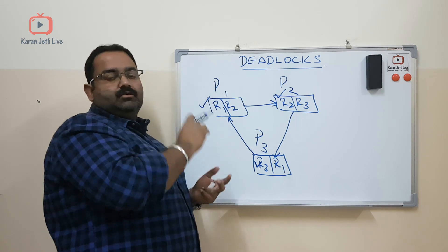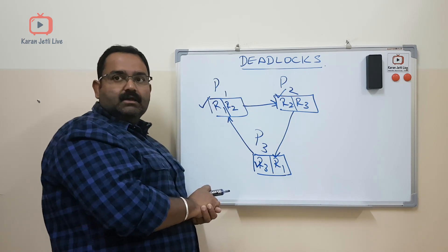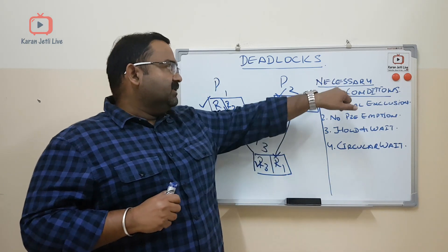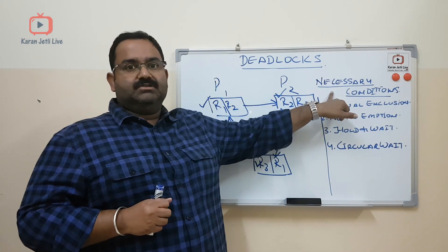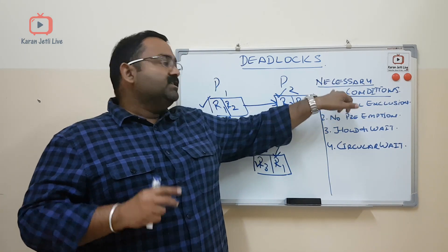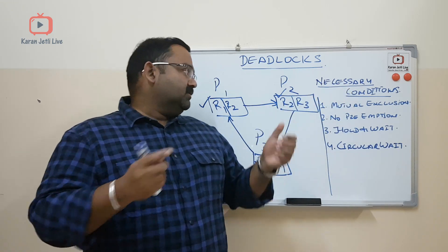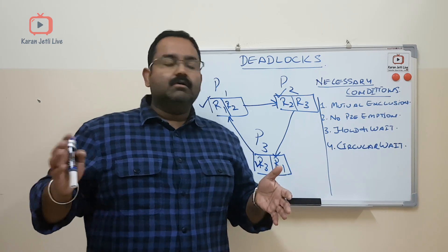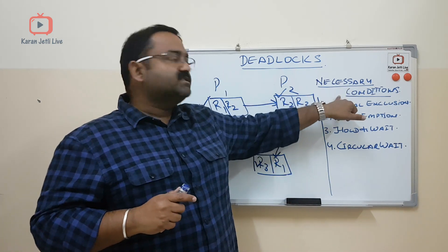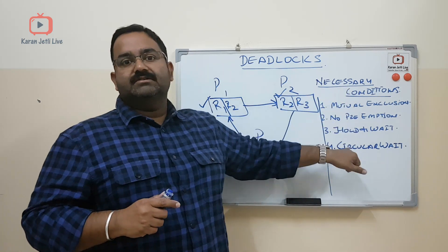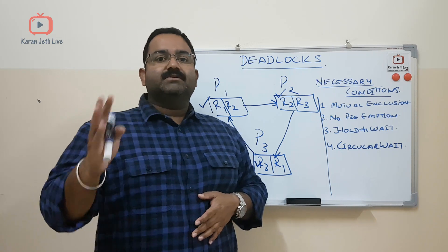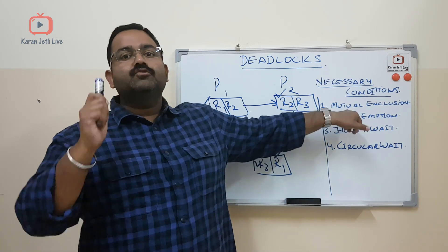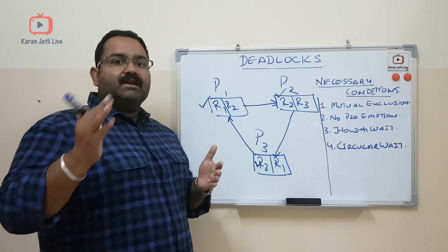They all keep on waiting and none of the processes can make any progress. This condition is called a deadlock. Now we will discuss the four necessary conditions which must be present in order to have a deadlock.